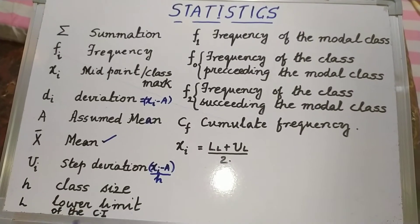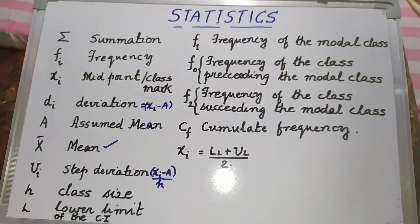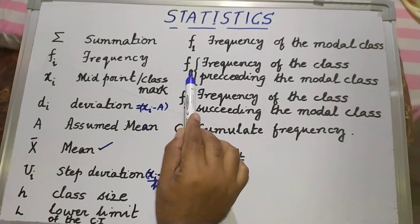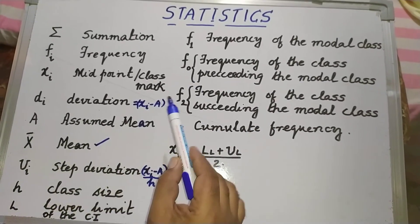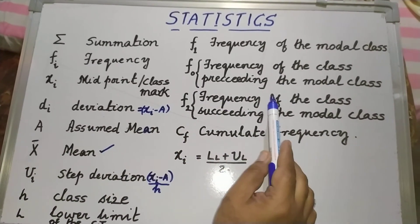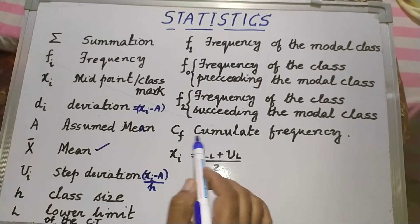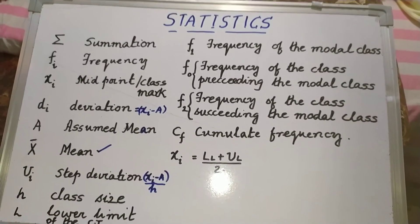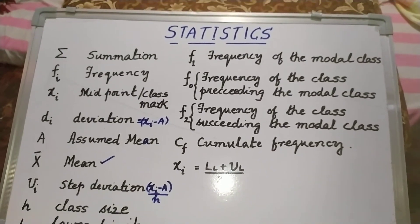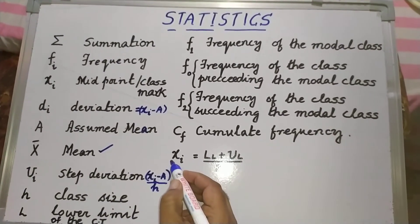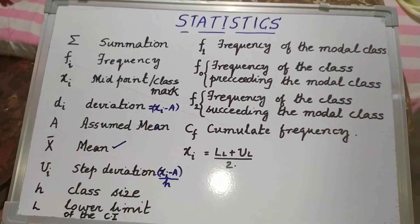H is the class size. L stands for the lower limit of the class interval. F1 is the frequency of the modal class. F0 is the frequency of the class preceding the modal class. F2 is the frequency of the class succeeding the modal class. CF is the cumulative frequency of the class preceding the median class. The midpoint is found by: lower limit plus upper limit divided by 2.